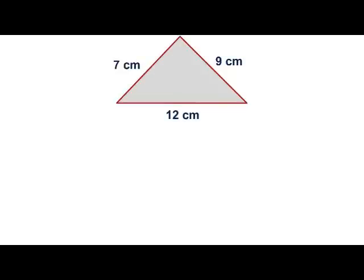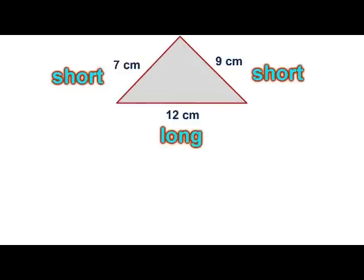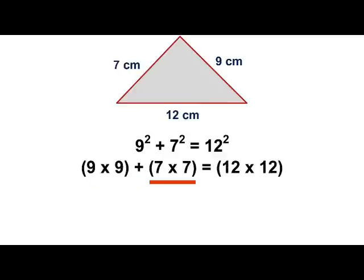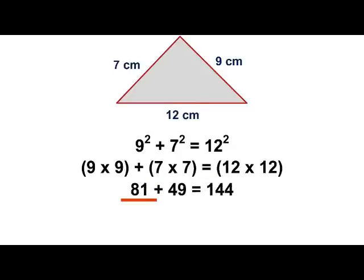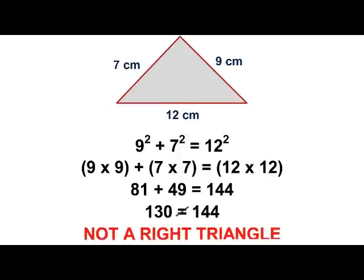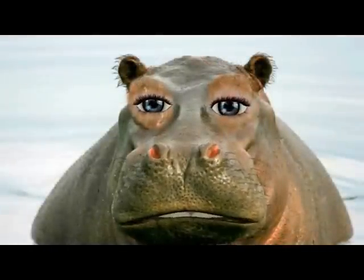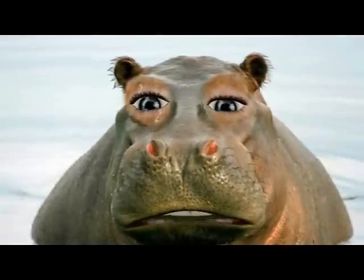Take a look at this triangle. You have two short sides of 7 centimeters and 9 centimeters, and one long side of 12 centimeters. If you plug this into the Pythagorean Theorem, you get this. 9 squared is 9 times 9, 7 squared is 7 times 7, and 12 squared is 12 times 12. 9 times 9 is 81, 7 times 7 is 49, and 12 times 12 is 144. And 81 plus 49 is 130. 130 does not equal 144, so it is not a right triangle.